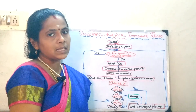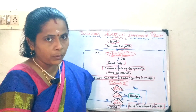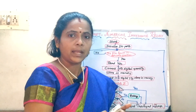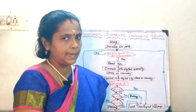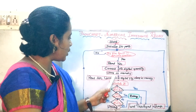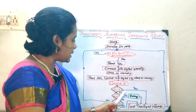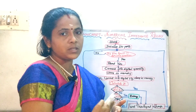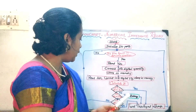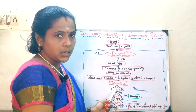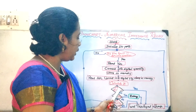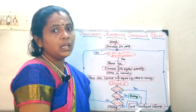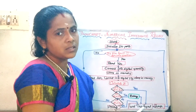This impedance relay, as we saw in the last class, depends on three-zone protection. The first zone protection is the primary protection which will act immediately or instantaneously without any delay. The V/I ratio is taken as Z, and Z1, Z2, Z3 represent the impedance for the first, second, and third zone protection. If the impedance is less than Z1, immediately without any delay you give the signal to trip the circuit breaker.